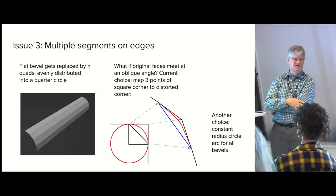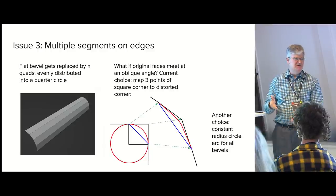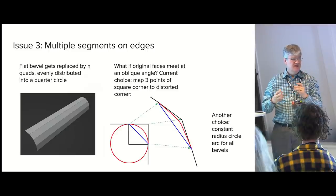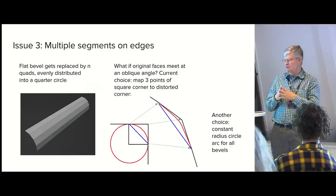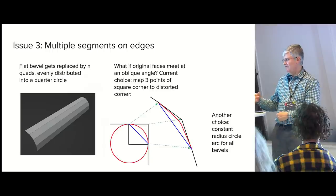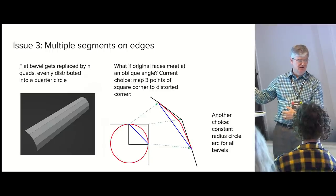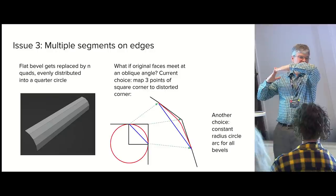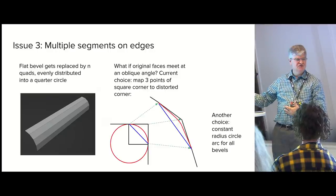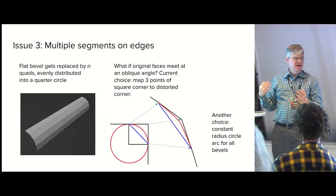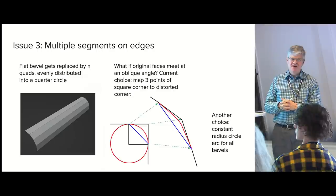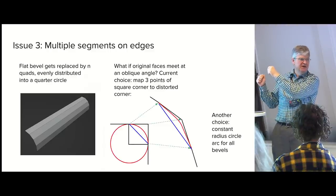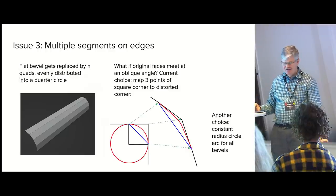The next issue is multiple segments on edges. We wanted this almost from the beginning of bevel: not just a single cutoff piece, but rounded edges. The obvious thing is to take a quarter circle and divide it into even chords as the profile. The first question is: what if edges don't meet at a 90 degree angle? What bevel currently does is figure out the transformation matrix that maps the 90-degree corner case into the distorted corner and then transforms the half-circle profile into place. That kind of works. But people have also asked for a constant-radius circle jammed into the corner, using whatever section of the arc you happen to get. I intend to give that as an option as well — haven't done it yet, but it'll be there.